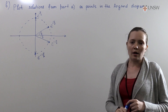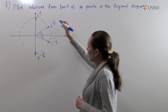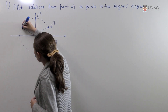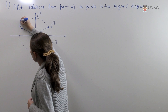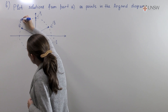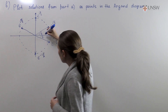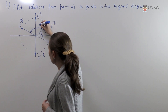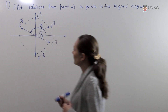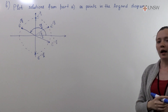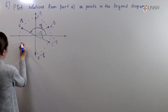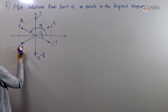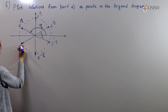We also have two more points. The first one is e to the i5π/6, so it will be somewhere here, and this angle from the x-axis will be 5π/6. And its conjugate is the point over here — the point e to the minus i5π/6.